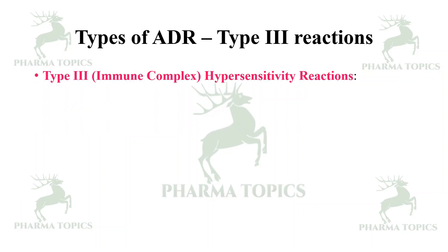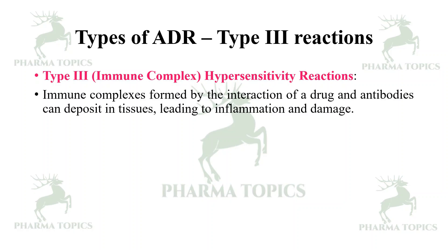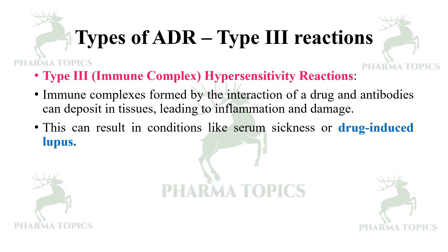Type 3 reactions are immune complex hypersensitivity reactions. Immune complexes formed by the interaction of the drug and antibodies deposit in the tissues, leading to inflammation and damage. This can result in conditions like serum sickness or drug-induced lupus, for example with sulfa drugs.